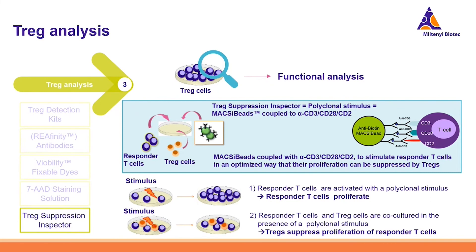The functional analysis of T-regs is a cellular assay, and for this we provide a kit called the T-reg Suppression Inspector. It is based on MACSiBead technology coupled to antibodies, which gives a polyclonal stimulus. In a co-culture with responder T-cells and MACSimBeads, the responder T-cells would proliferate according to the stimulus. But when T-regs are added, because T-regs suppress immune responses, they would then also suppress the proliferation of the responder T-cells if they are fully functional.